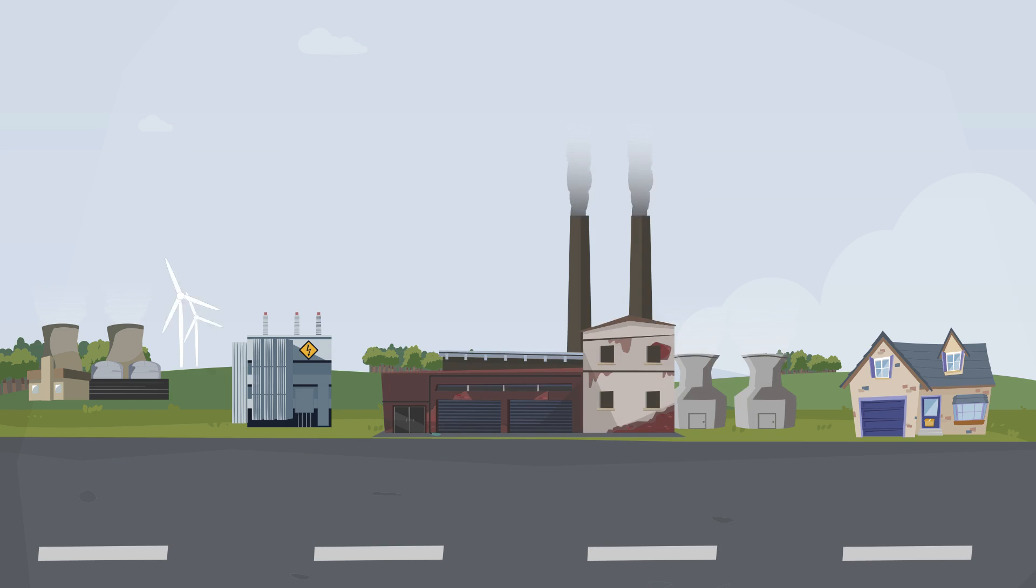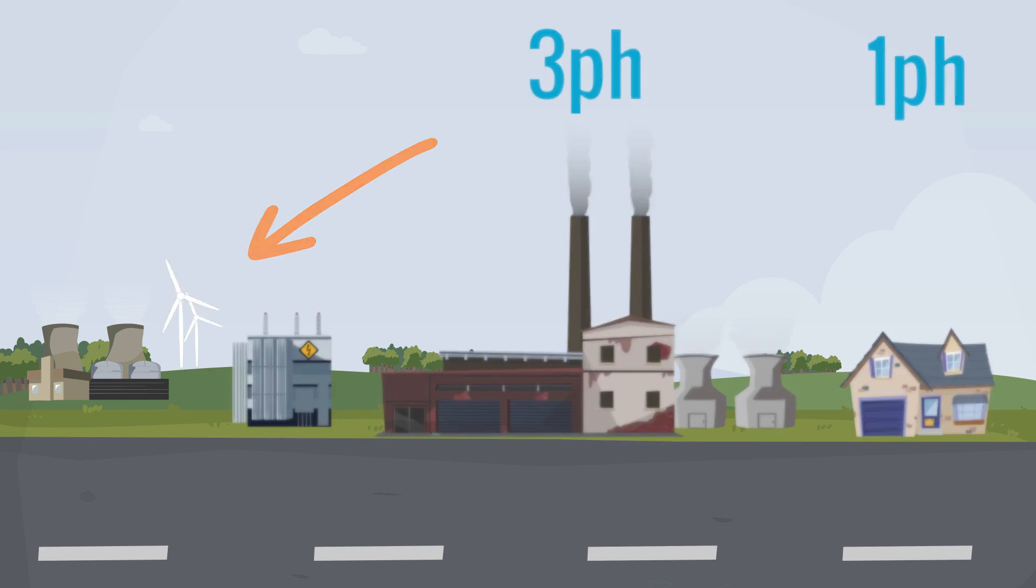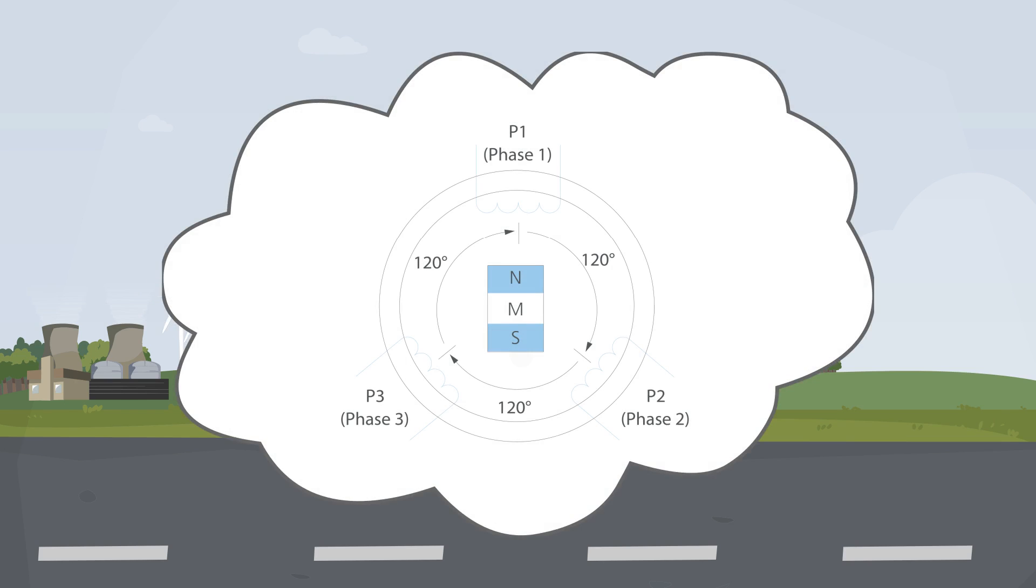All electricity generated and fed into the national grid is three-phase. Three-phase and single-phase electricity that is then delivered to us is derived from the same electrical supply. Remember the copper coils at the power plant? Each of the three phases is generated by one of those copper coils that surrounded the rotating magnet. While this gives us a three-phase supply, we can take one of these three phases to create a single-phase supply.